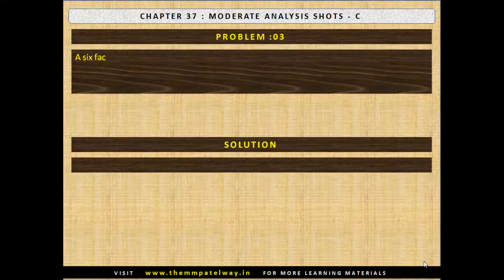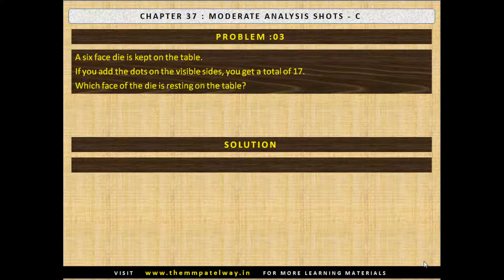Problem No. 3. A 6-faced die is kept on the table. If you add the dots on the visible sides, you get a total of 17. Which face of the die is resting on the table? The sum of all dots is 1 plus 2 plus 3 plus 4 plus 5 plus 6, that is 21. We get the answer by subtracting 17 from 21.